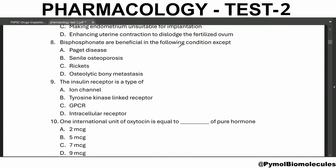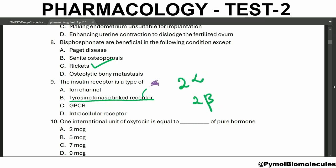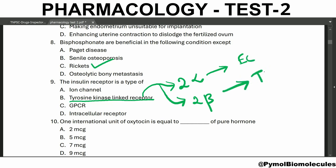Bisphosphonates are beneficial in the following conditions except Rickets. The insulin receptor is a type of tyrosine kinase-linked receptor. It contains two alpha subunits and two beta subunits. The alpha subunits are present extracellularly and the beta subunits are present in the transmembrane region.